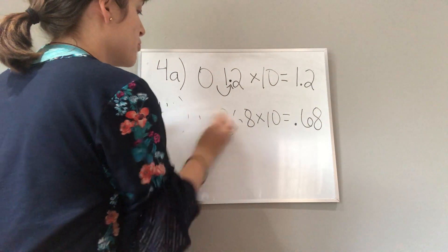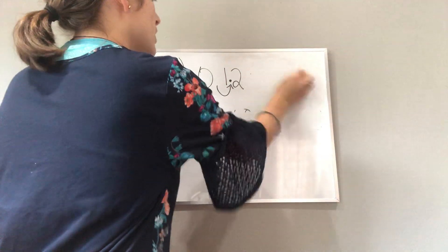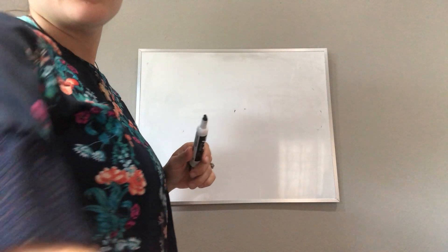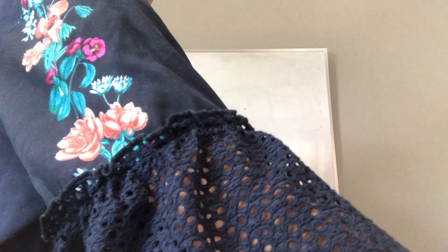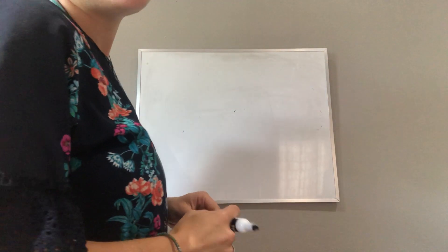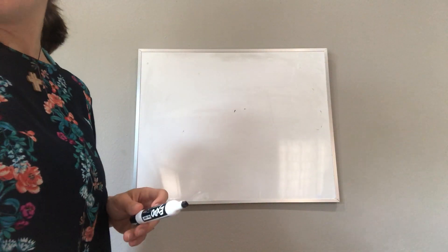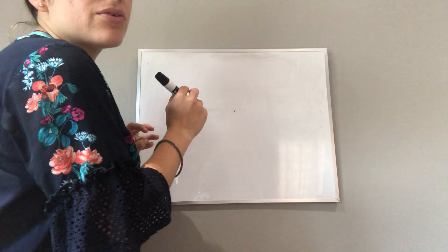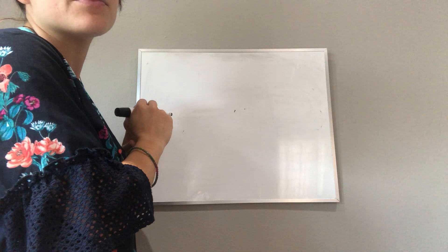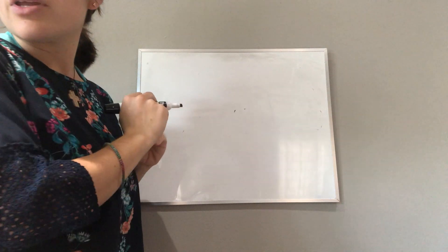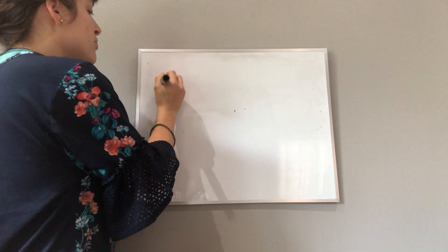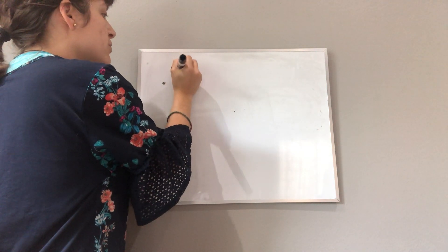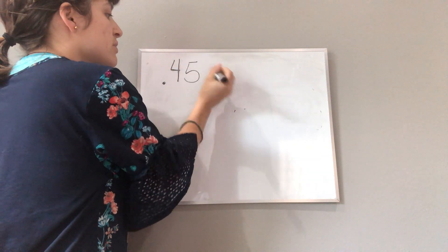Now let's look at a different type of problem. If you turn your textbook to page 10, let's look at this problem here. I have .45, or 45 hundredths, and I want to multiply it by a whole number — let's say 3.